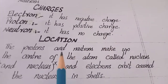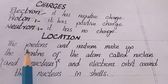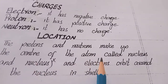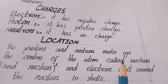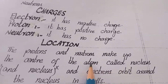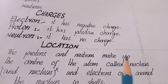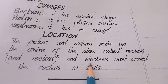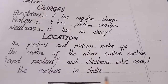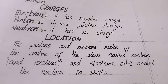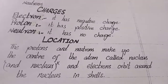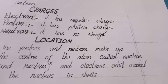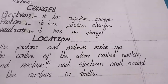Third, locations: the protons and neutrons make up the center of the atom called the nucleus. Nucleus में दो चीज़ें होती हैं: proton और neutron। Electrons orbit around the nucleus in shells — nucleus के باहر shells में electrons revolve करते हैं। I hope you understand. Thank you.